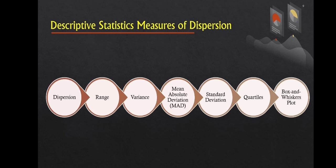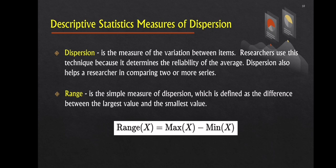The next is descriptive statistics measures of dispersion. These include calculations from dispersion, range, variance, mean absolute deviation or MAD, standard deviation or SD, quartiles, box and whiskers plot. All of these calculations can be done using Microsoft Excel. Let us first discuss dispersion. Dispersion is a measure of the difference between items. This technique is used by researchers because it determines the reliability of the average. Dispersion is also useful for comparing two or more series. The next is range. Range is a straightforward measure of dispersion defined as the difference between the largest and the smallest value. Given is the formula for calculating range.